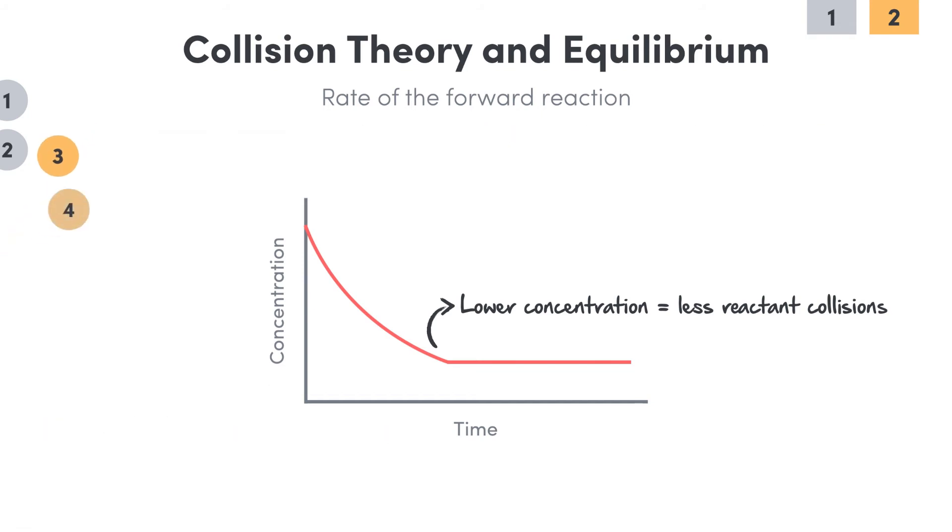So, overall, we can see that as the reaction progresses, the decrease in concentration of the reactants means we get fewer successful collisions, so we get a decrease in the rate of the forward reaction.